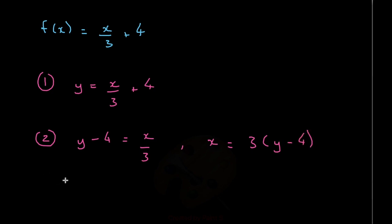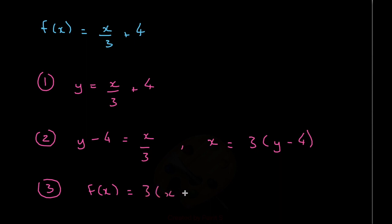Our final step is to replace the x with f(x) and the y with x — basically because a function is generally written in terms of x, not y. So f(x) is equal to 3 times (x minus 4). And this is our inverse function. But remember, to write an inverse function it has to be a minus 1 on top. So this is our final inverse function for this bigger original function.